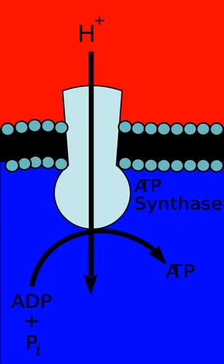However, in specific cases, uncoupling the two processes may be biologically useful. The uncoupling protein thermogenin, present in the inner mitochondrial membrane of brown adipose tissue, provides for an alternative flow of protons back to the inner mitochondrial matrix. Thyroxine is also a natural uncoupler. This alternative flow results in thermogenesis rather than ATP production. Synthetic uncouplers also exist and can be lethal at high doses.